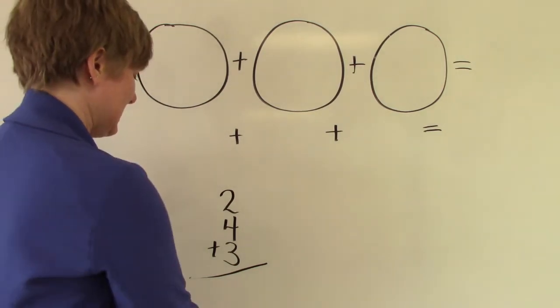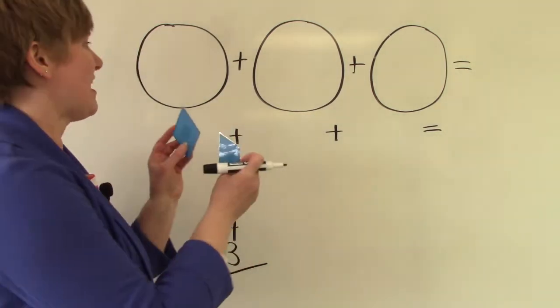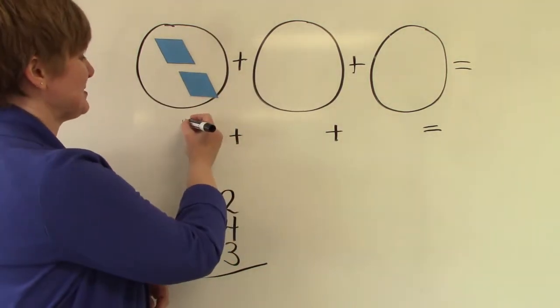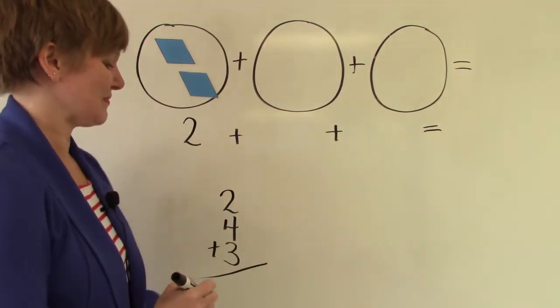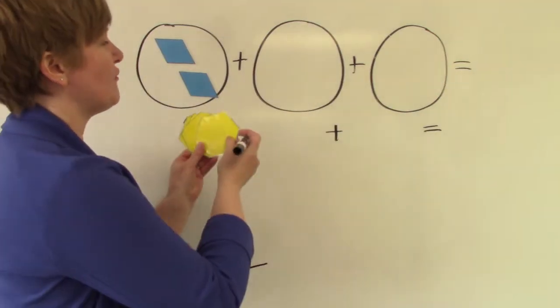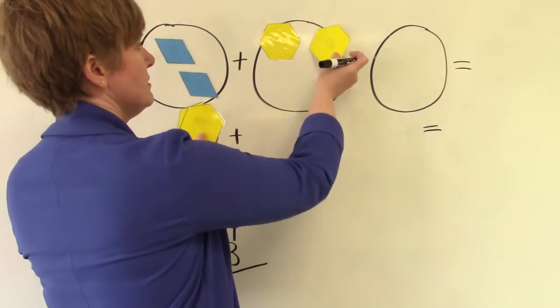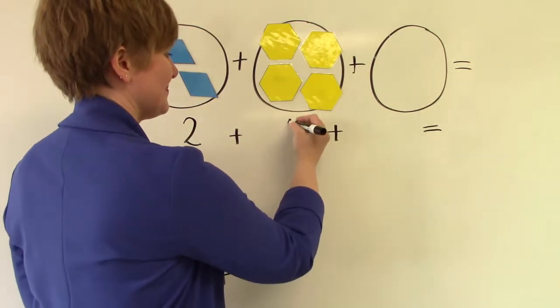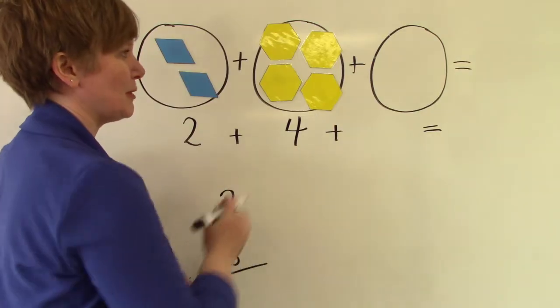I like to use shapes. So I have two more parallelograms. So it's two. And I have four hexagons. One, two, three, four. Two plus four.